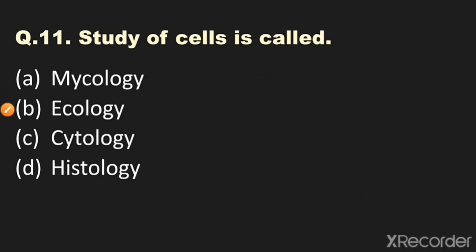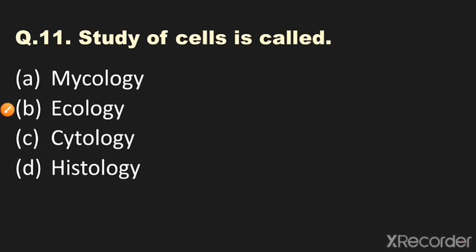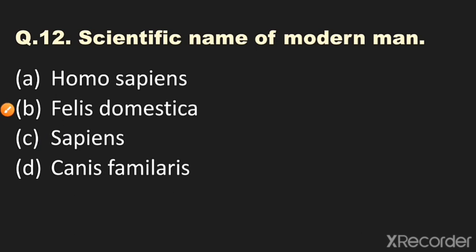Question number eleven: The study of cells is called? Options: A) mycology, B) ecology, C) cytology, D) histology. The answer is cytology — the study of cells is called cytology. Question number twelve: The scientific name of modern man? Options: A) Homo sapiens, B) Phalus domestica, C) Sapiens, D) Canis familiaris. The answer is Homo sapiens.